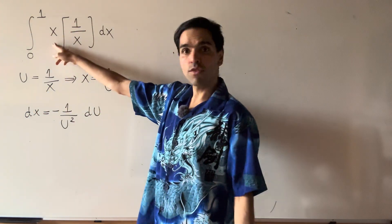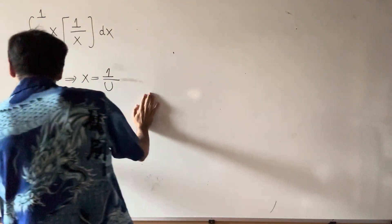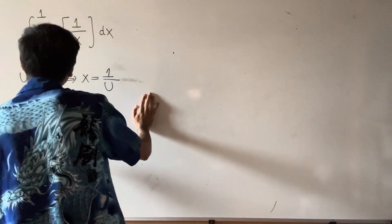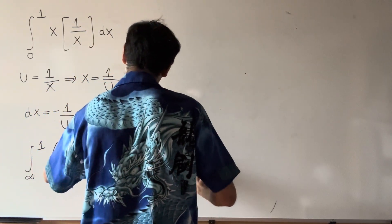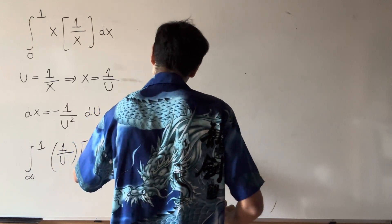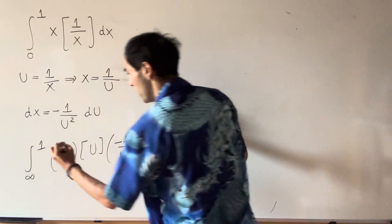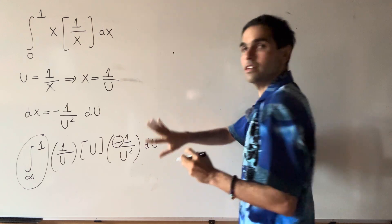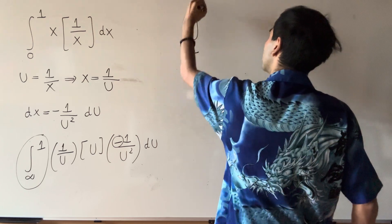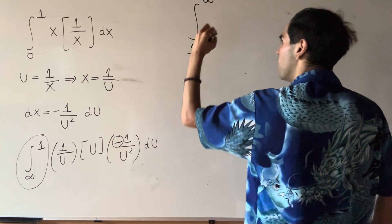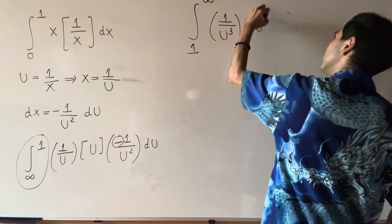If x is 0 plus, then u is infinity. If x is 1, then u is 1. So that integral becomes the integral from infinity to 1 of 1 over u, floor of u, and then minus 1 over u squared du. This integral is in the wrong order, but because of this minus sign, we can turn it into the right order, and then the integral becomes the integral from 1 to infinity of 1 over u cubed times floor of u du.